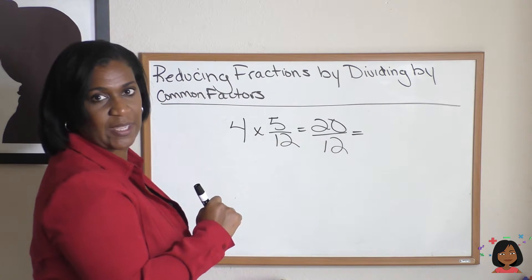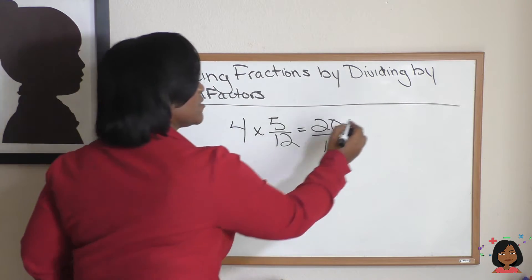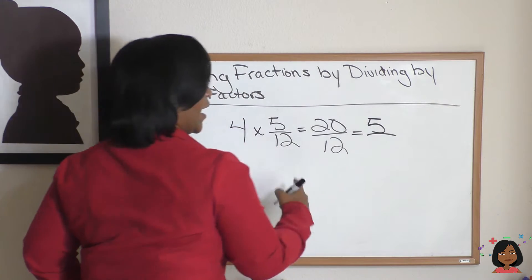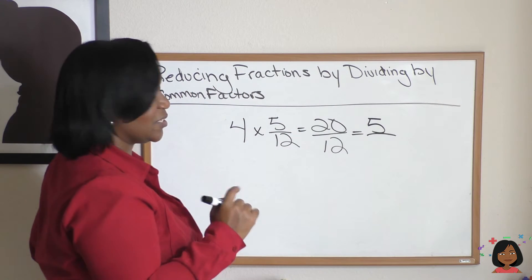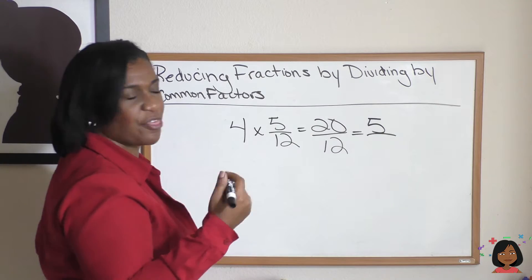So let's try it. 4 goes into 20 how many times? 5 times. And 4 goes into 12 how many times? 3 times.